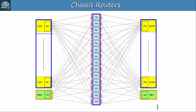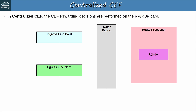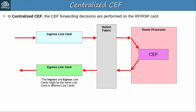Now let's see how this relates to CEF. Basically the question is: what part of this modular system should perform CEF forwarding? In centralized CEF, the CEF forwarding decisions are performed on the RP or RSP card. A packet arrives on an interface on a line card, travels through the switch fabric to the RP, which uses CEF to decide which interface the packet should be forwarded out of. It is then sent back through the switch fabric and out of the appropriate interface on the egress line card — hence the name centralized CEF. CEF is performed centrally by the route processor card. Note that the ingress and egress line cards might be the same or different, depending on which interface receives the packet and which interface it will be sent out of. The route processor could be on its own RP card or a component of an RSP card, depending on the architecture of the specific device.